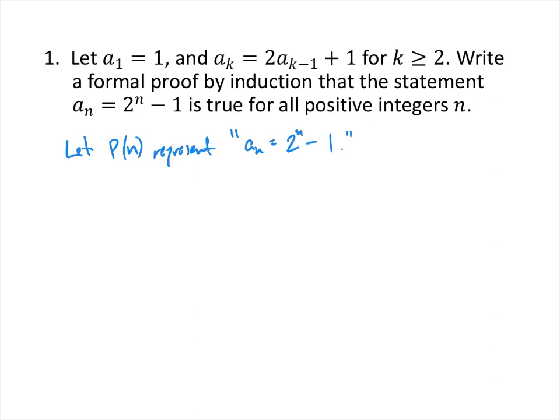Our goal is to prove that this statement is true when n equals 1, when n equals 2, when n equals 3, and so on. A proof by induction comes in two steps. The first step is to prove that the statement is true for the first positive integer, namely 1. Then we have our induction step. The base case is usually pretty simple, and the induction step is a little more complicated.